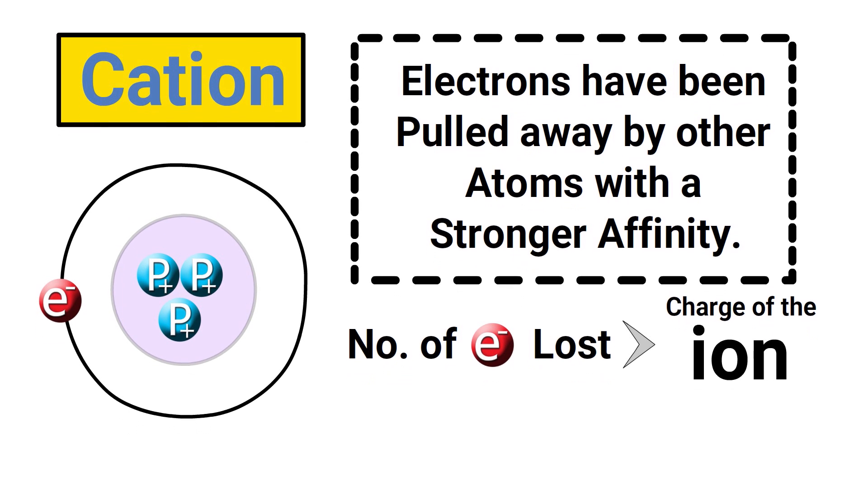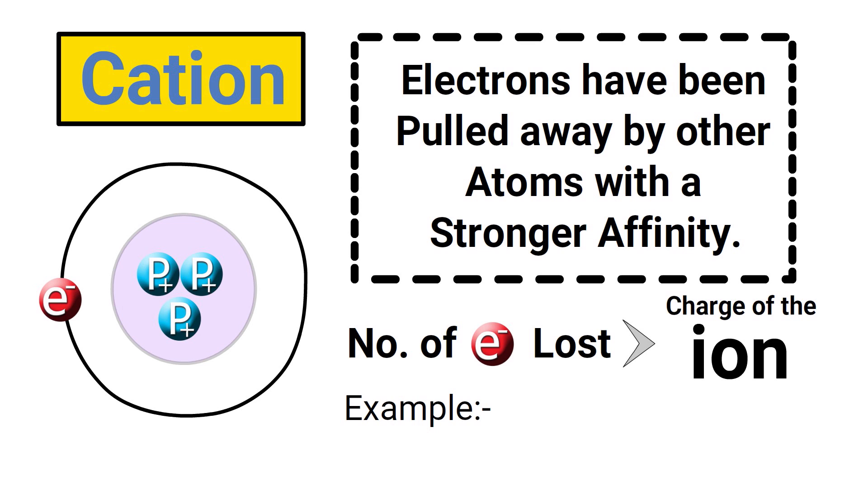For example, if silver were to lose one electron then it would be shown as Ag positive because now it is positively charged.